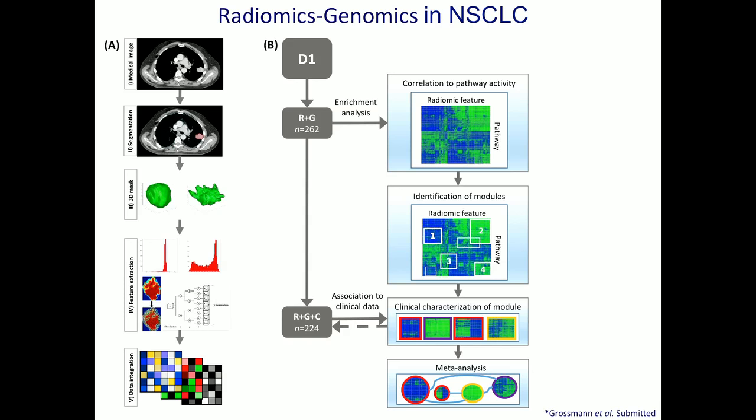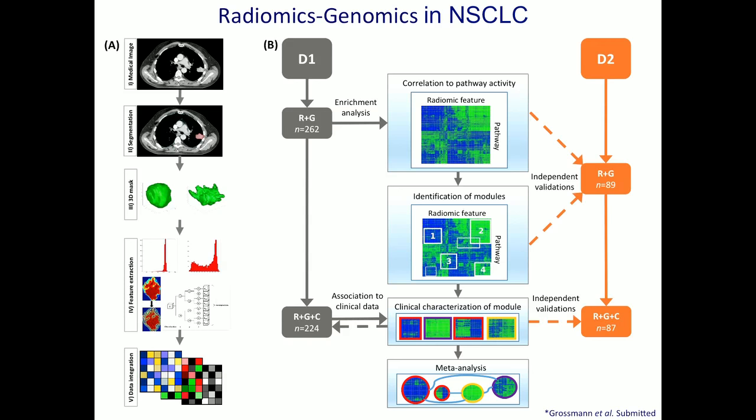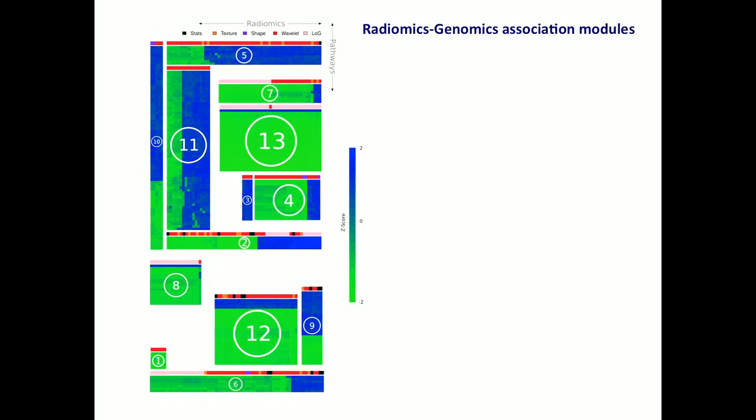For 262 patients we had radiomics and genomics data. We performed gene-set enrichment analysis to look at the domain associations between different radiomics features and different pathway expression values. We used a bi-clustering approach to assess what the main associations are between radiomics features and underlying gene expression data. We had 13 main modules identified and independently validated — we found that these radiomics modules are really associated with distinct biological processes.